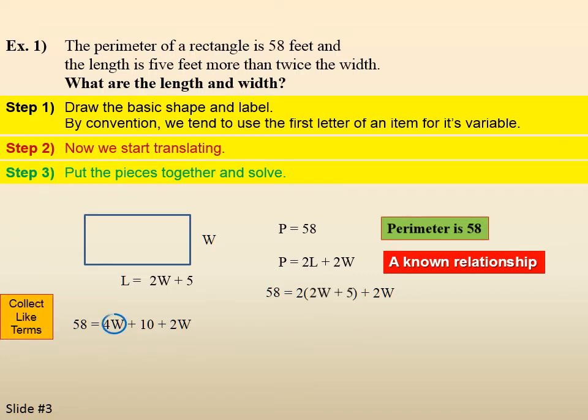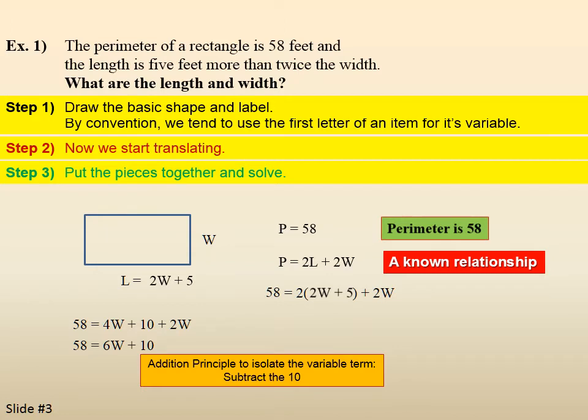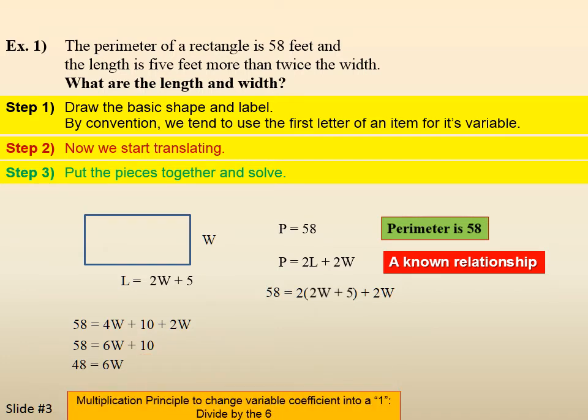Collect like terms. 4W plus 2W is 6W. Bring down the rest of the problem. Use the addition principle to isolate the variable term. So, we're going to subtract 10 from both sides. So, we get 6W equals 48. Then, we use the multiplication principle to change the variable coefficient into a 1. So, we're going to get rid of that 6W and make it W by dividing by the 6. So, we get W equals 8.